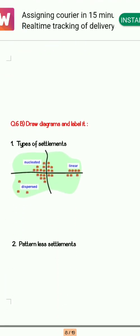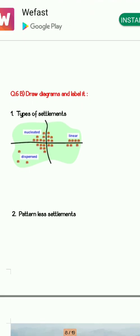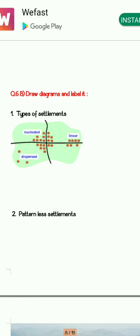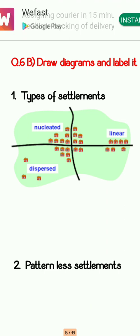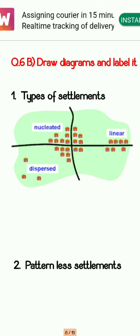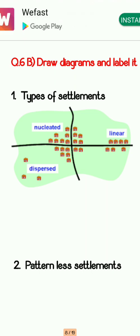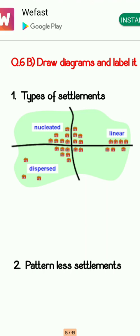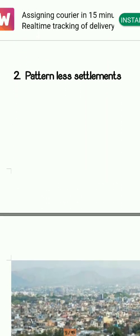Next is question number 6B: draw the diagrams and label them. Here we have types of settlements. If this type of question comes, you have to show all the types of settlements as much as you can. You can see that two roads are intersecting — in one single diagram, they have shown linear, nucleated, and dispersed settlements. This is how you can draw several settlements in a single diagram.